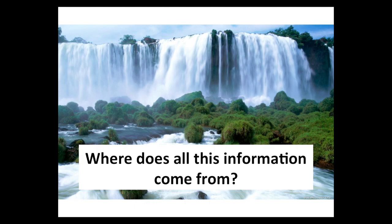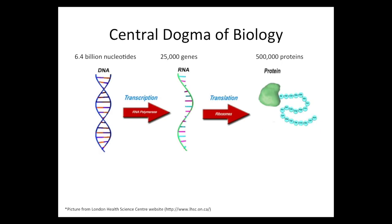So what are we measuring? Where are we getting this information? Well, for the longest time there's been this central dogma of biology. Basically, in each one of your cells, you have DNA, and this DNA is made up of approximately 6 billion nucleotides — and again, we can measure all that. This DNA has genes in it. There are approximately about 25,000 genes. These genes produce messenger RNA, and again, we can measure this as well. This messenger RNA then goes to create proteins — that's how your DNA in your cells does anything.